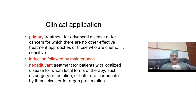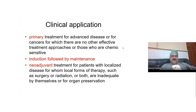Chemotherapy is used as a primary treatment — for example, in lymphoma, leukemia, or other blood cancers where surgery and radiation are not effective, chemotherapy is the primary modality of treatment. Chemotherapy is also the primary modality of treatment when the disease is advanced and surgery is not possible.